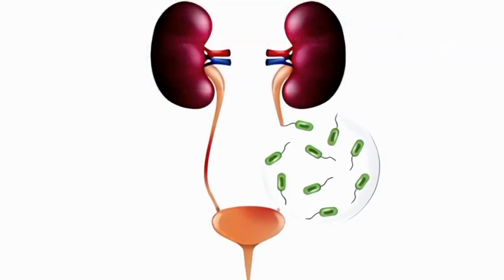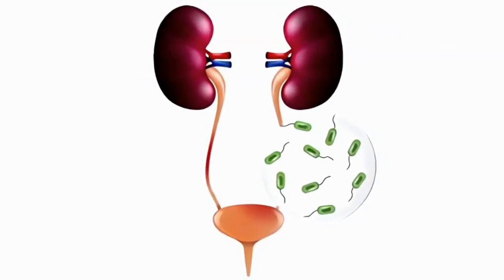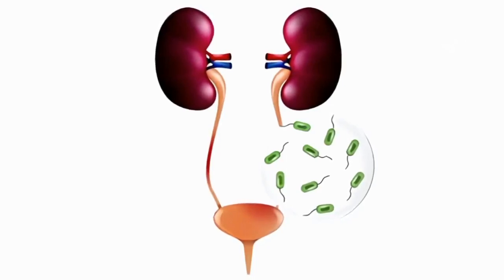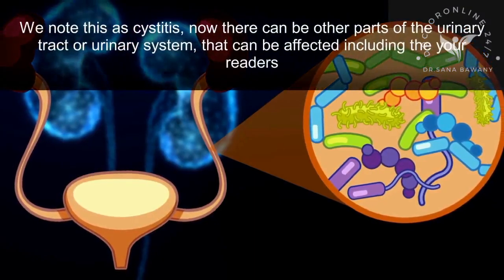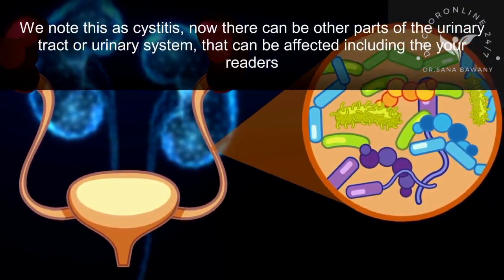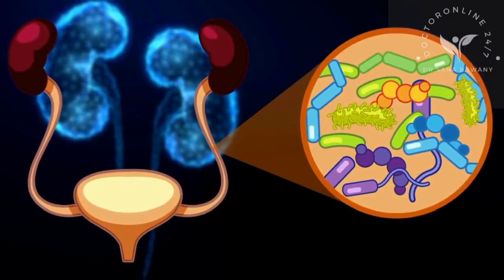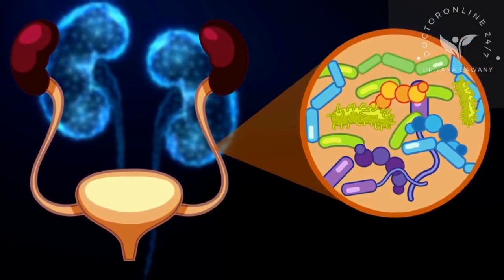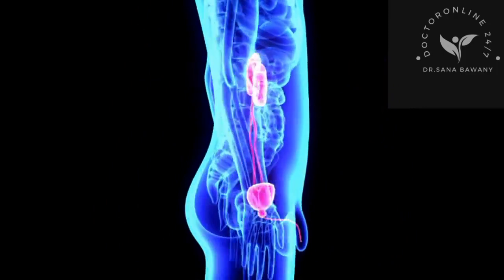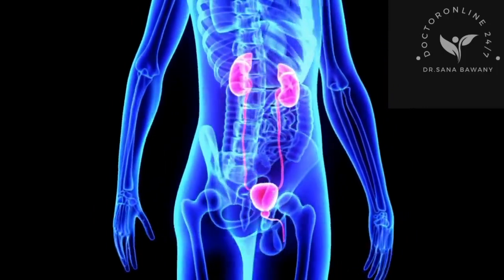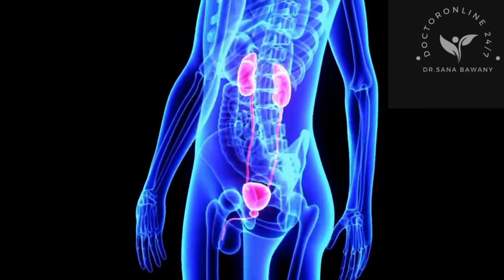What is most commonly affected in a simple urinary tract infection is an infection of the bladder, which we note as cystitis. Other parts of the urinary tract can also be affected, including the ureters. Urinary tract infections can get so bad that they ascend up the ureters and even infect the kidneys, causing pyelonephritis.